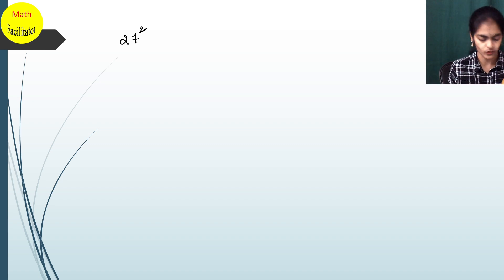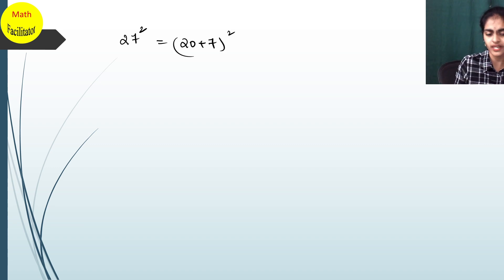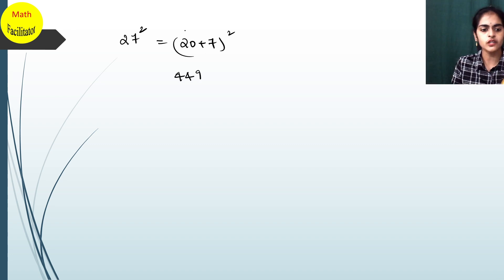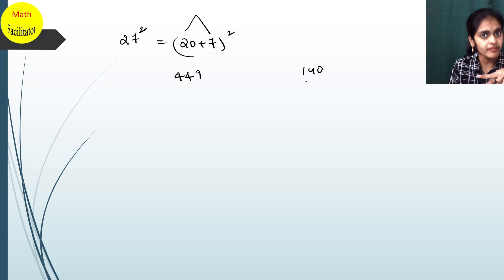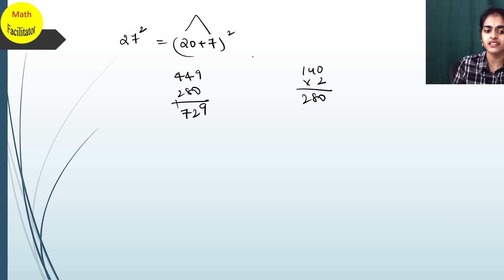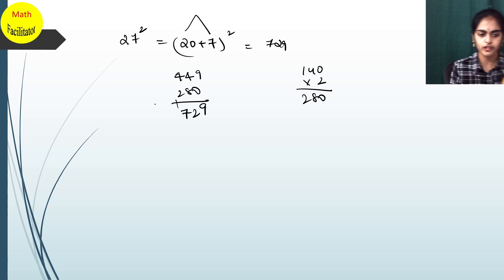I hope the trick is now clear. Let's find 27². I can write it as (20 + 7)². 20² = 400, 7² = 49, so 400 + 49 = 449. Now 20 × 7 = 140, and double of 140 is 280. Adding: 449 + 280 = 729. This method helps you reduce mistakes that you would make with direct multiplication.